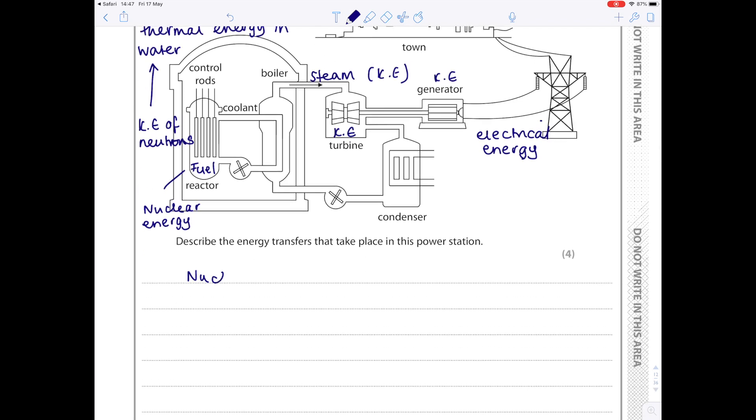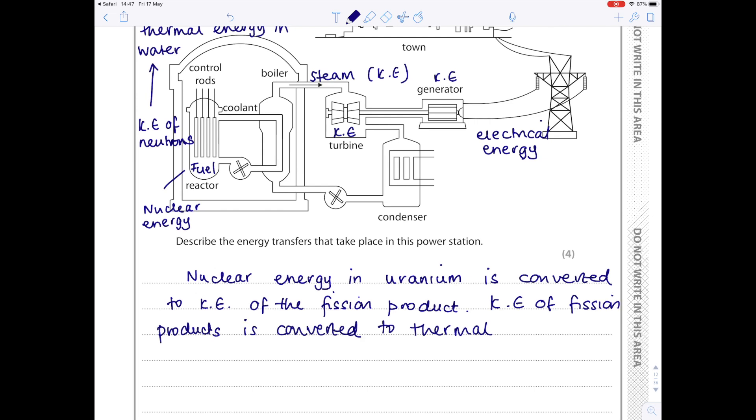That thermal energy in the water is used to produce steam, and the steam gains kinetic energy because obviously those water particles move more quickly. So we've summarized it now, and now I'm going to write a full answer. So nuclear energy in uranium is converted to kinetic energy of the fission products. Kinetic energy is converted to thermal energy of the water.